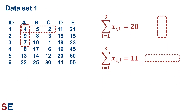A useful skill is visualizing where in the data table the summation is taking values from. For our top example, the second subscript is 1, so we're staying in column 1, but going from rows 1 to 3 — that's the dashed rectangle in the data table. For our second sum, the first subscript stays as 1 (first row), and the second changes 1 to 3 (columns 1, 2, and 3), represented by the dotted rectangle.